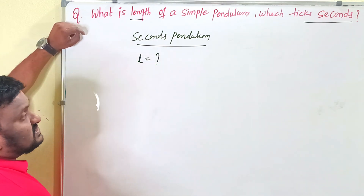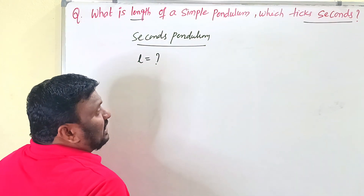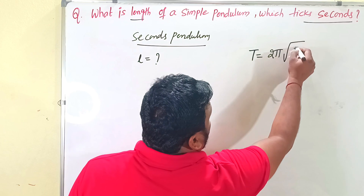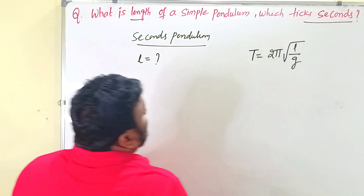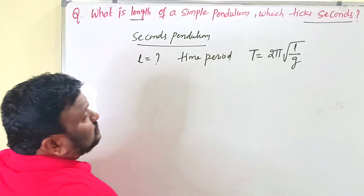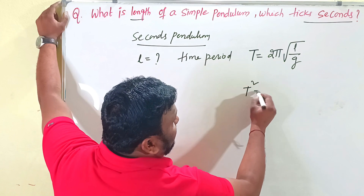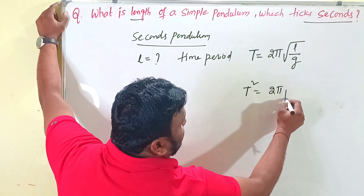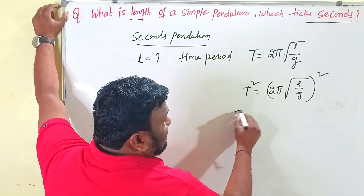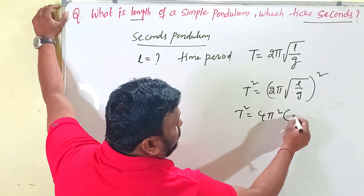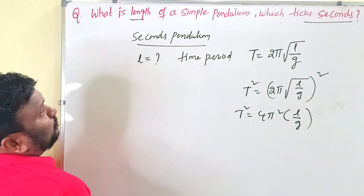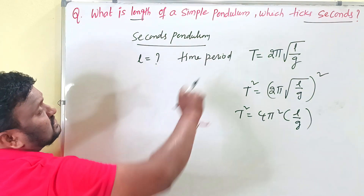To calculate the length, we use the time period formula: T = 2π √(l/g). This is the time period of the simple pendulum. Now, squaring both sides, we get T² = (2π √(l/g))², which gives us T² = 4π² × (l/g).